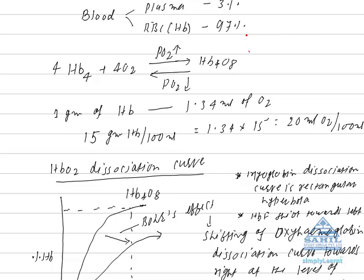We are going to discuss transport of gases, starting with transport of oxygen. Transport of oxygen occurs exclusively via blood. The two parts of blood which participate in O2 transport are plasma, which contributes 3%, and RBC, whose functional unit is hemoglobin, which contributes 97% of O2 transport.